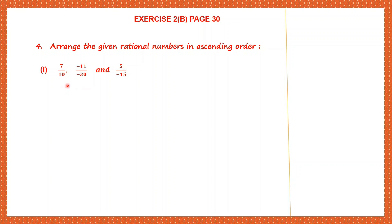What does standard form mean? It means that the denominator should be positive. So here we have 10, it's already positive. Here we have minus 30, it should become 30. Here we have minus 15, it should become 15. So let's rewrite these rational numbers making the denominators positive. The first one, 7 by 10, will remain the same because the denominator is already positive.